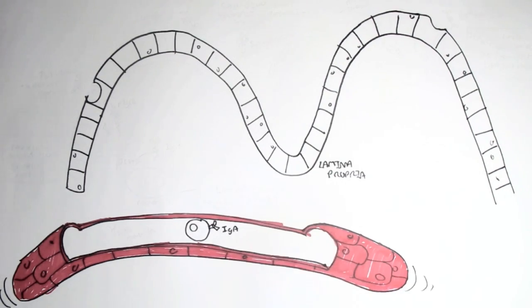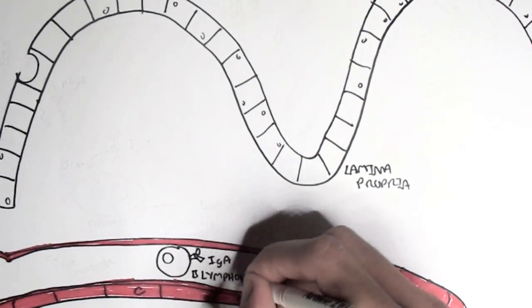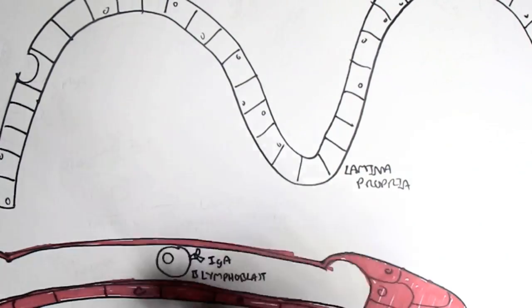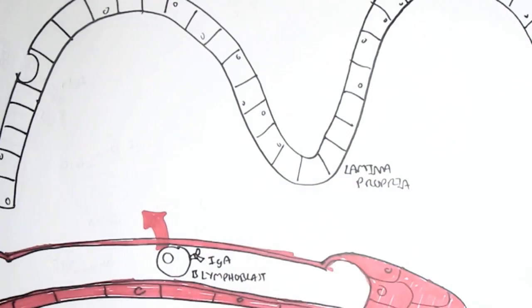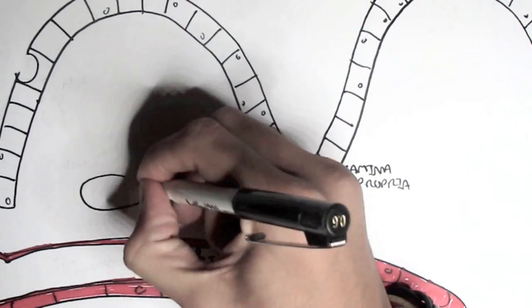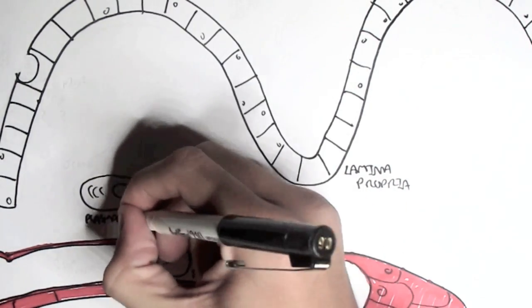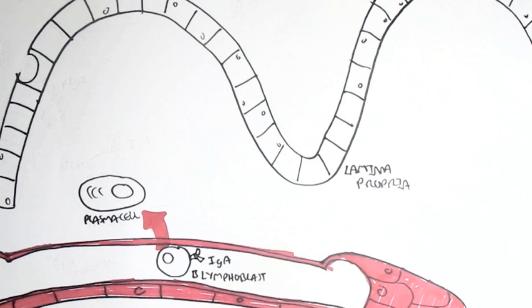I mentioned before that the plasma cells become activated once they leave the blood vessel into the tissue with the help of T helper cells. So here we have an IgA B lymphoblast leaving the blood vessel and becomes an IgA producing plasma cell.